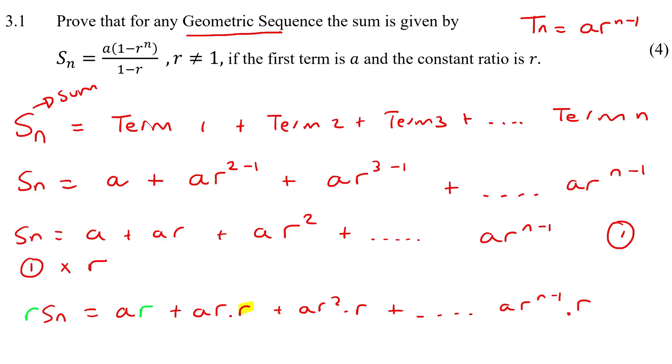And there's the r over there that I've multiplied on. And so what we then have is rSn equals to ar plus this just becomes r squared. This becomes r cubed. And then what do we do here?